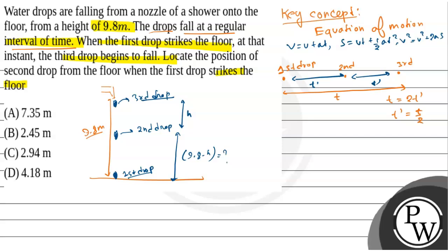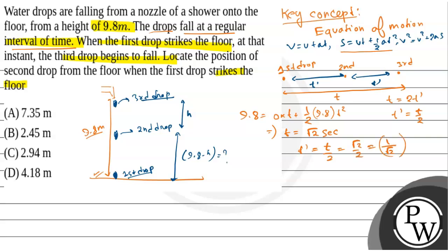T is basically the time required for the first drop to reach the ground. Applying the equation of motion: s = ut + ½at², we get 9.8 = 0·t + ½(9.8)·t². Solving this gives t = √2 seconds. That means t_dash = T/2 = √2/2 = 1/√2 seconds.